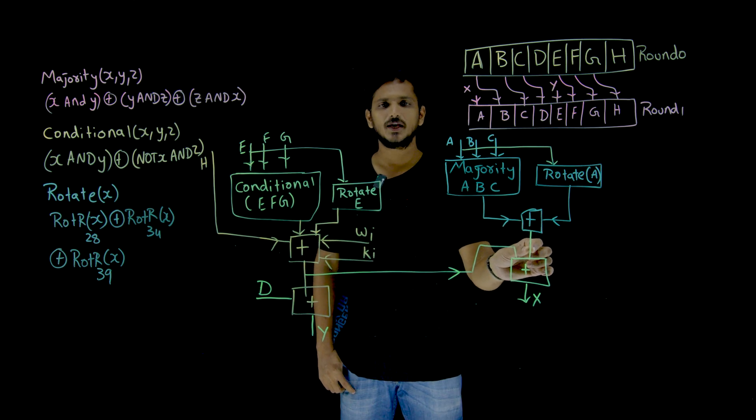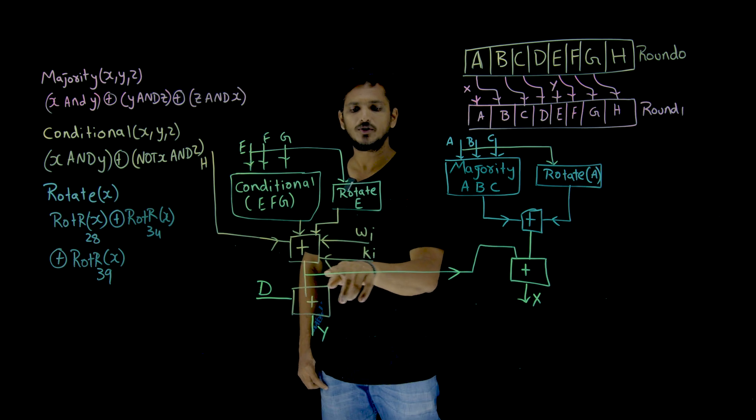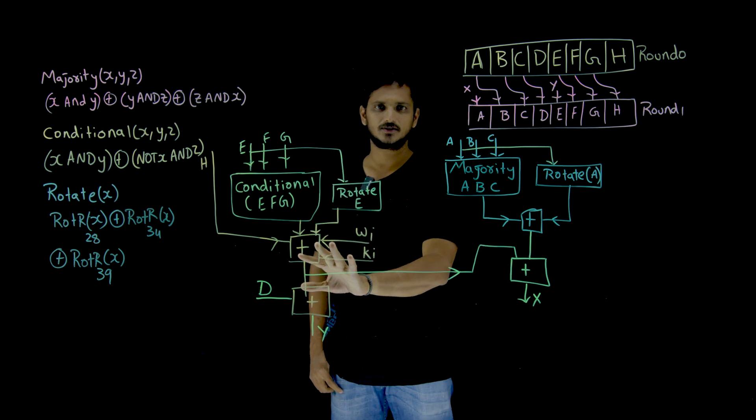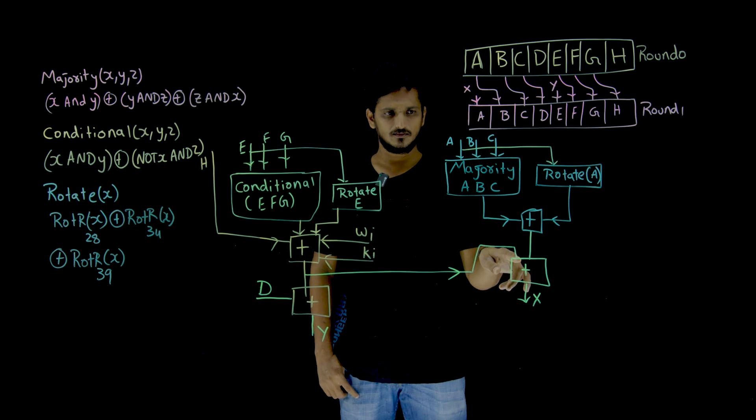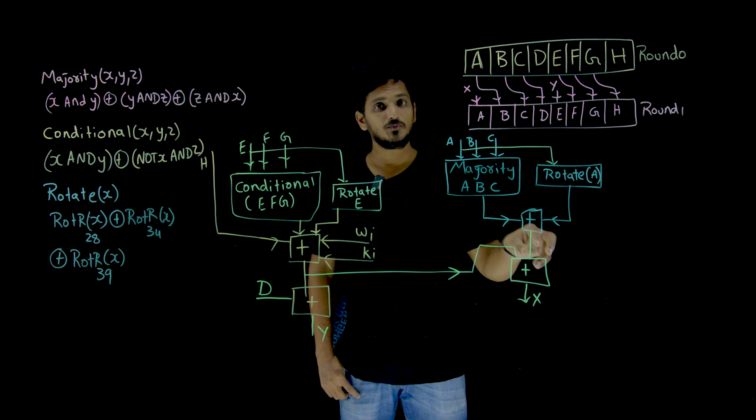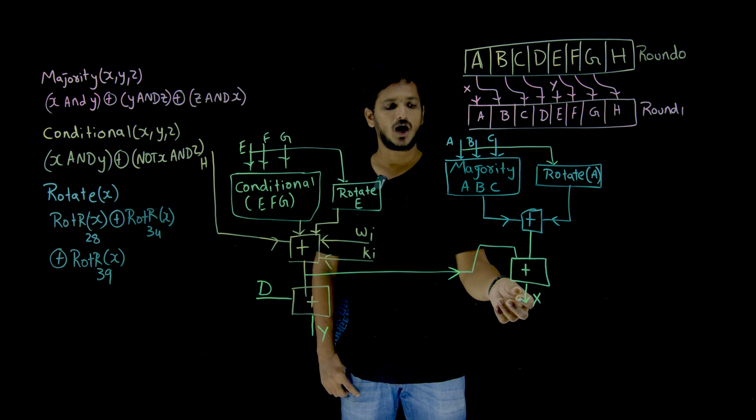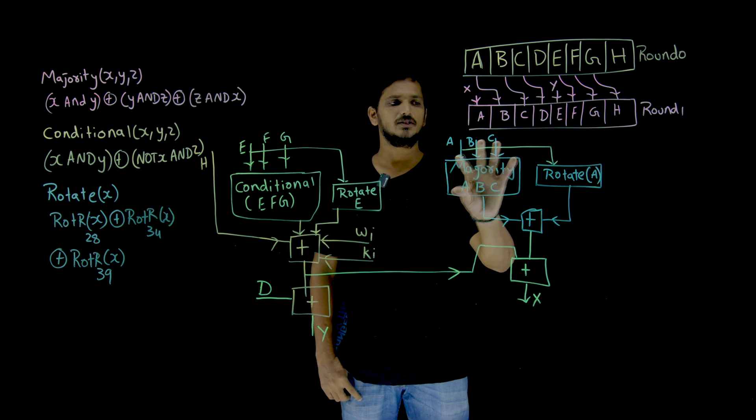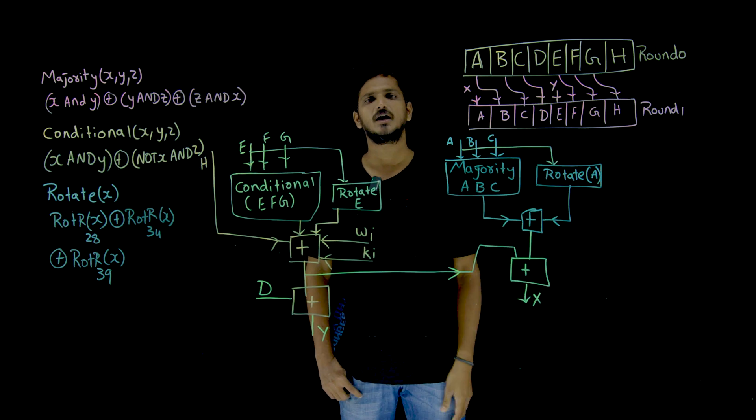And the output which we got here, this is again going to take one more input from Y, from the Y side, this function side. Again, these two values are going to get addition modulo 2 power 64 and the final output which we got here, we call it as X value. In order to find X, this is what happens inside the rotation.